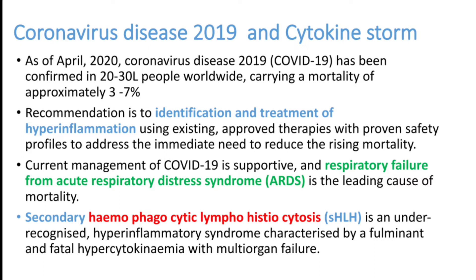In coronavirus 2019, researchers observed a cytokine storm syndrome. Around 30 lakh people around the world had this disease with a mortality rate of around 3 to 7%, which is higher compared to H1N1's 1.5% mortality. The major problem driving this mortality is cytokine storm or hyper-inflammation syndrome. Most of these patients died due to ARDS, secondary HLH, or macrophage activation syndrome. ARDS may itself be a part of this cytokine storm.